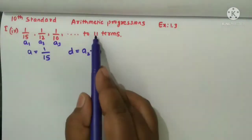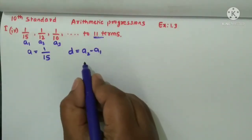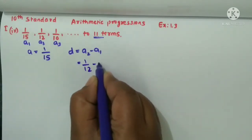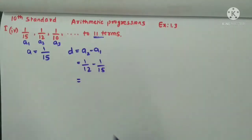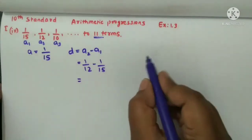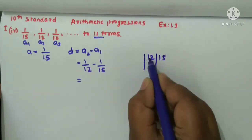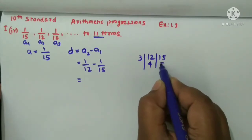We want to find the sum of the 11 terms, so a2 is 1 by 12 minus 1 by 15. Here we should take the LCM of 12 and 15 because we have to subtract it. 12 and 15 LCM is here. 12 and 15 will come in the 3 table, so 3, 4 is 3, 5 and 4 and 5 will not come in any same table.